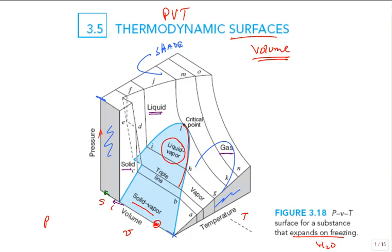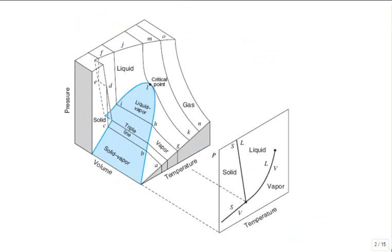Ready to move on. If you take the PVT surface and project it into 2D, you get the familiar PT diagram — pressure on the y-axis, temperature on the x-axis. That line is the vapor pressure curve, with the critical point right there and the triple point. On the projection, the triple line appears as just a point. You get the liquid, solid, and vapor regions, plus lines showing two-phase equilibrium between solid-vapor, solid-liquid, and liquid-vapor.